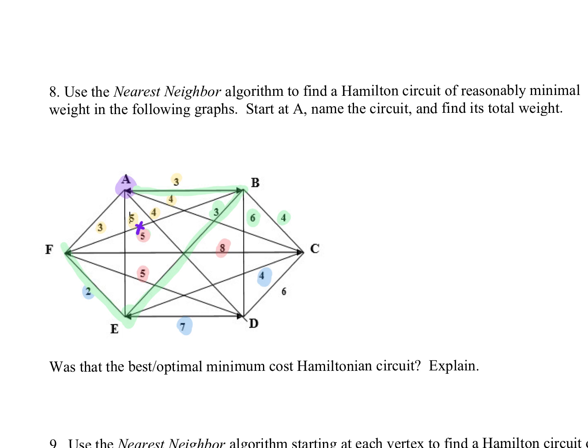But these other two, this eight and this five are an option, and five here is cheaper. So I'm going to take that edge, this five, and that takes me down to vertex D.